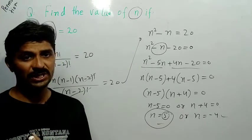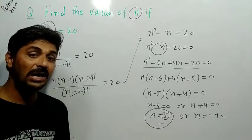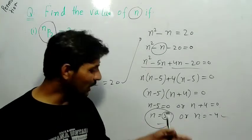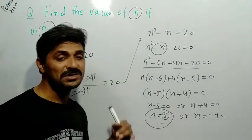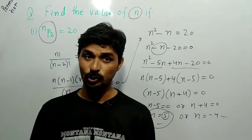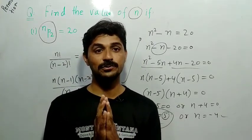Friends, many such problems are related in our exercises and especially in textbooks as examples. Now at home you can find values in this way, friend. The negative value we reject, means we consider n's positive value only. So friends, if you liked my video, please share this video with your friends and like it. Don't forget to like. Thank you for watching my video.